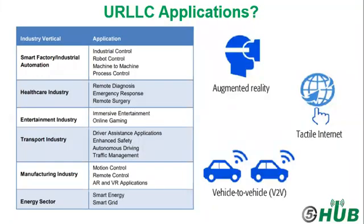URLLC applications that require ultra-low latency networks across different industries are summarized in this table. For example, industrial automation is a key application for ultra-reliable low-latency features. Some industrial processes have extremely tight key performance indicators, or KPIs, for 5G communication links between sensors and controllers. Use cases include motion control, industrial Ethernet control-to-control communication, process automation, electric power generation, and distribution. To enable these applications, an end-to-end latency lower than 0.5 milliseconds and extremely high reliability with a block error rate of 10⁻⁹ is required.